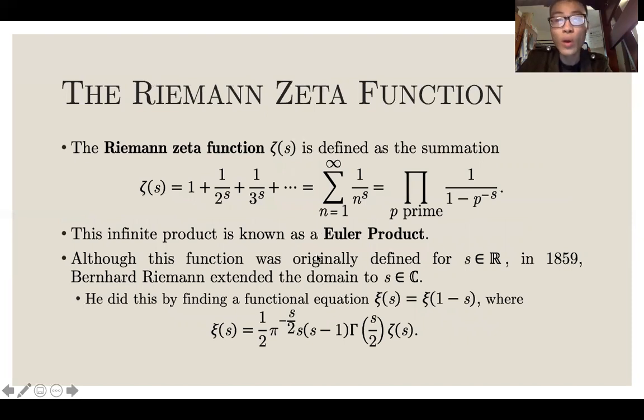Now, this is the holy grail. The Riemann zeta function is defined as the summation from one to infinity of one over n to the s. This infinite sum can be expressed as an infinite product over the primes, one over one minus p to the negative s. This infinite product is known as the Euler product. So to study primes, we need to study the Riemann zeta function because it has all the primes encoded in it.